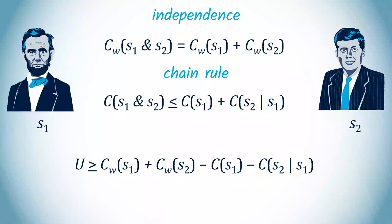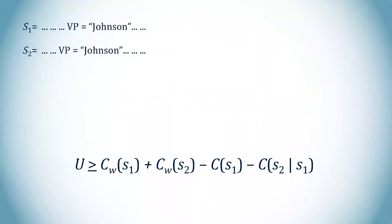Let's study the contribution of the name of the vice president, Johnson, to this difference. The name appears both in S1 and in S2. C(Johnson) represents the complexity of describing that name among other names. CW(Johnson) represents the complexity of the circumstances that led the U.S. vice president to carry this name.